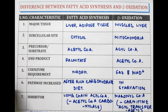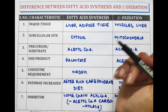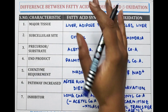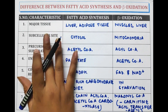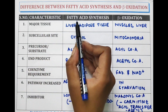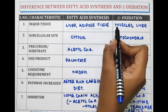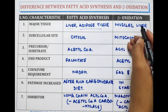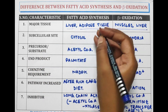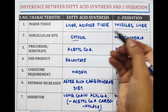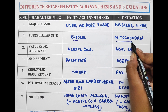Let's have a look at fatty acid synthesis and beta oxidation — what are the differences between these two pathways? The major site for fatty acid synthesis is liver and adipose tissue; for beta oxidation it is muscle and liver. The subcellular site for fatty acid synthesis is the cytosol, and for beta oxidation it is the mitochondria.